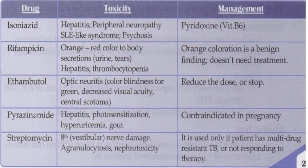Rifampicin toxicity causes orange to red discoloration of urine or tears — this is a benign finding requiring no treatment. Hepatitis and thrombocytopenia may also occur. It induces the P450 enzyme system and can cause acute renal shutdown. Ethambutol affects the eye, causing optic neuritis, color blindness for green, decreased visual acuity, and central scotoma. If any of these symptoms occur, reduce the dose or stop the drug.